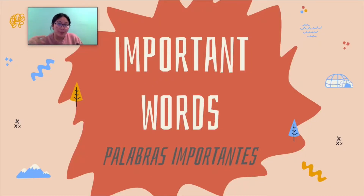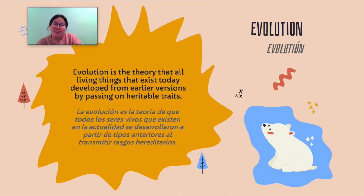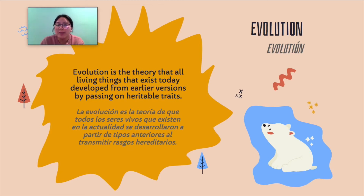Now for some important words. First is evolution. Evolution is the theory that all living things that exist today developed or came from earlier versions by passing on heritable traits. In past weeks, you guys learned about heritable traits, so if you need help with that, you can go back and review the past video.